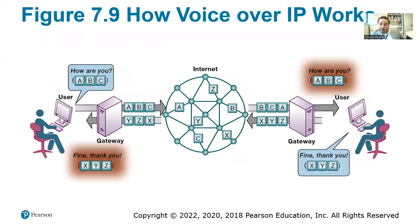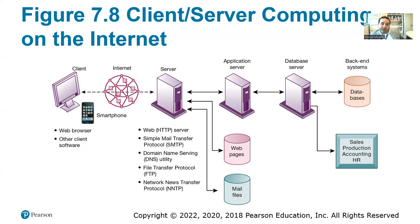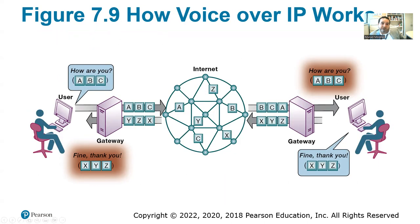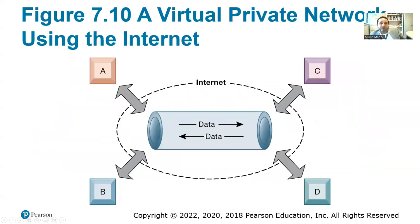VoIP uses packet switching — you have a message, it divides it into packets labeled A, B, C, sends it through the internet. When it reaches the gateway of the end user or destination, it reassembles and appears as intended. The tunneling method provides VPN or virtual private network protection — communication is protected through encryption.